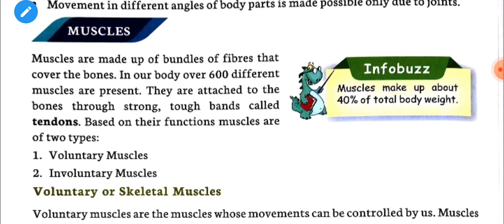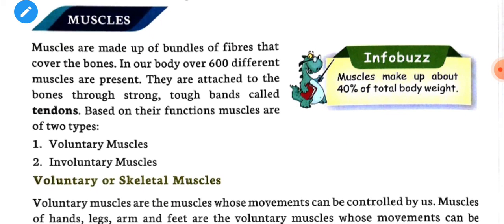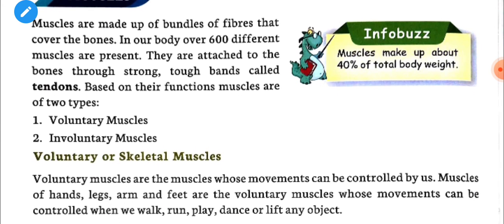Muscles are made up of bundles of fibers that cover the bones in our body. Over 600 different muscles are present in our body. They are attached to the bones through strong, tough bands called tendons. Based on their functions, muscles are of two types: voluntary muscles and involuntary muscles.